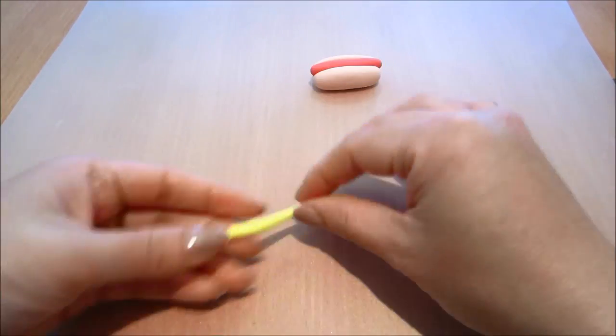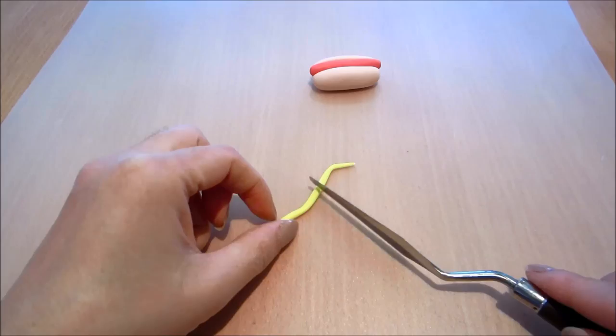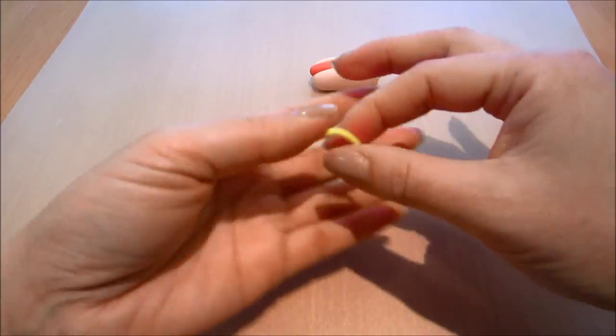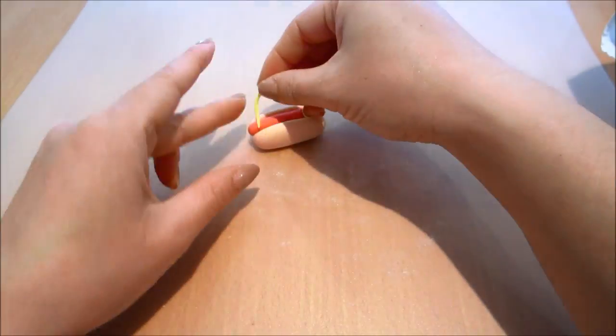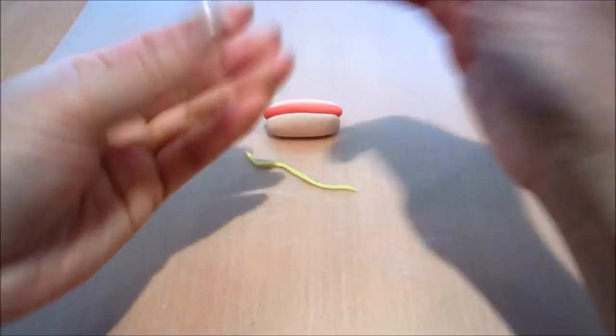And now onto some yellow fondant. I'm just going to keep stretching this out by rolling it out. Dusting it with my corn flour bag so it doesn't get too sticky. Once it's thin and long enough I'm going to glue it onto my hot dog.